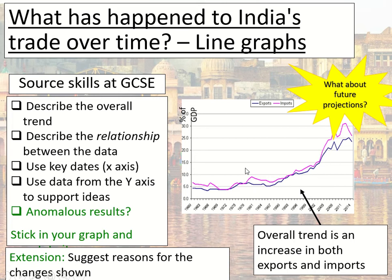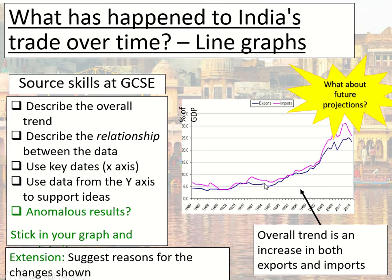I'd like you to work through this list of geographical skills. Get the graph from 365, stick it in your page, and work through: what is the overall trend? What is the relationship between imports and exports? Try to use data and key dates in your answer. Are there any anomalous results? If you get that done in about three minutes, try and identify reasons for why the changes have occurred. I've given you a starting point — the overall trend is an increase in both, but the increase becomes far more rapid from the late 90s.